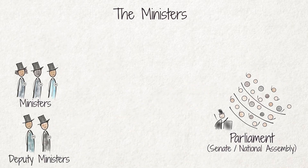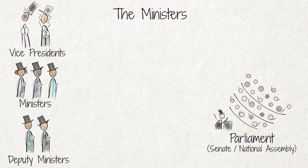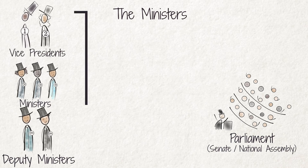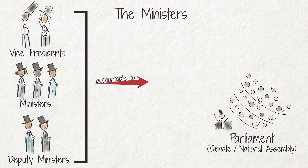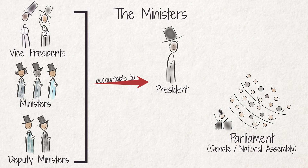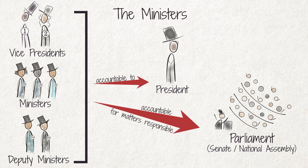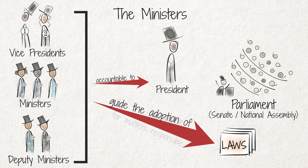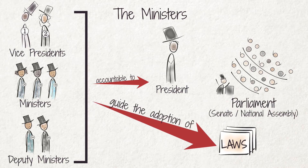The vice presidents, ministers, and deputy ministers are accountable to the president for the performance of their duties and must also account to parliament about matters for which they are responsible. Ministers also contribute to discussions on matters of importance, including the adoption of laws, in the Senate and the National Assembly.